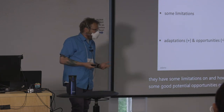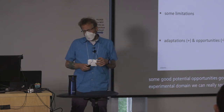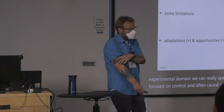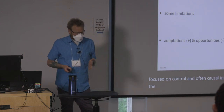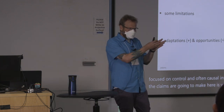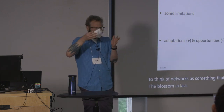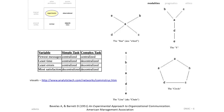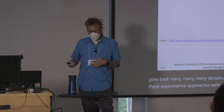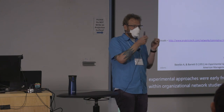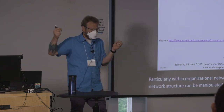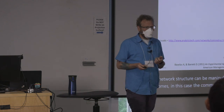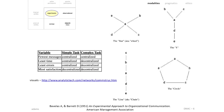In the experimental domain, the focus is really on control and often causal inference aims. One claim I'll make is that a lot of people seem to think of networks as something that has blossomed in the last 20 years or so, but almost all of these approaches have a history going back many decades. Early examples include social psychological and organizational network studies thinking about how network structure can be manipulated to produce optimal communication patterns and flows, and how different types of tasks require different network structures.